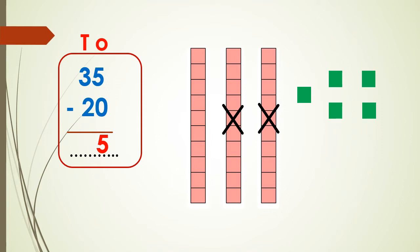How many are left? We have 5 ones: 1, 2, 3, 4, 5. So I write 5 in the ones place — 5 minus 0 equals 5. And we have 1 ten, so 3 minus 2 equals 1. I write 1 in the tens place. When we subtract multiples of 10 from any two-digit number, we just subtract the tens and the ones stay the same.